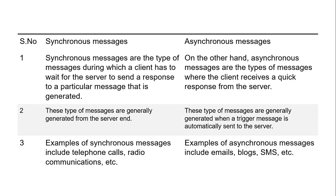What is the difference between synchronous and asynchronous messages? In synchronous messaging, the client has to wait for the server to send a response to the message generated. In asynchronous messaging, the client receives a quick response from the server. Synchronous messages are generally generated from the server end, while asynchronous messages are triggered automatically and sent to the server. Examples of synchronous communication include telephone calls and radio communication, while examples of asynchronous communication include email, blogs, and SMS.